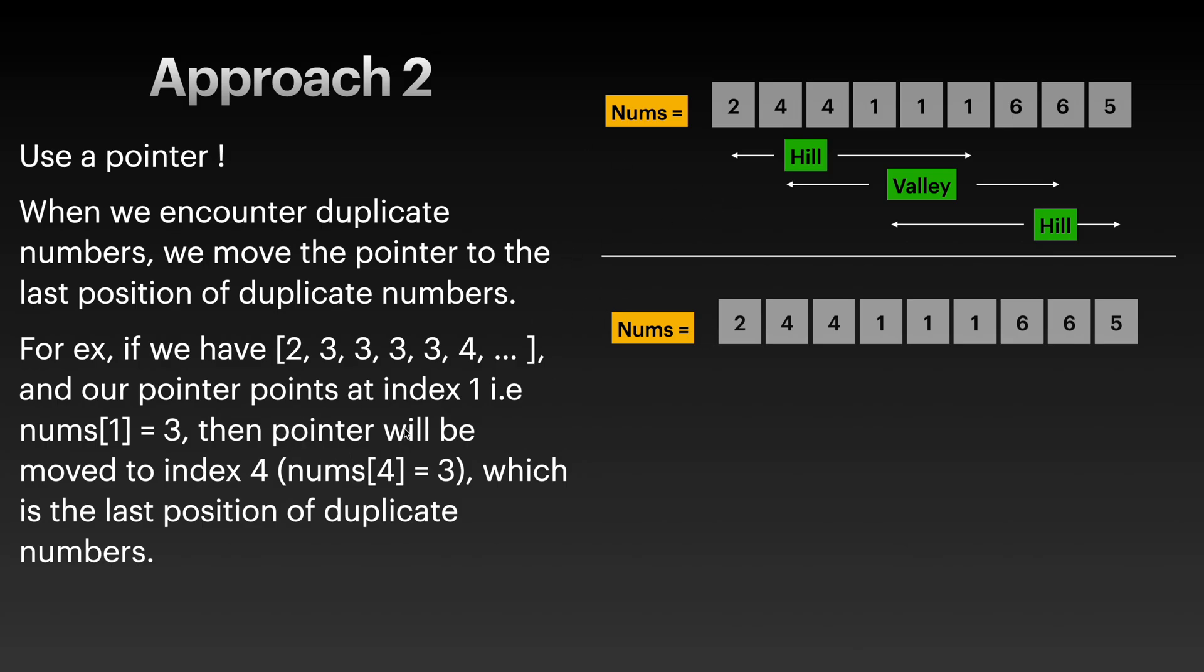So Approach 2 - let me see what I wrote here. Let's look at this example: 2, 3, 3, 3, 4, and there's some numbers that follow after 4. Our pointer also points at index one, so that's this 3. We will move our pointer, which is currently at this index, to index four. Why is that? We will create two more variables called left_number and right_number. In this case, our pointer will be here, and our left_number will be this guy.